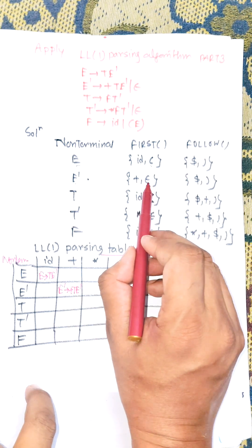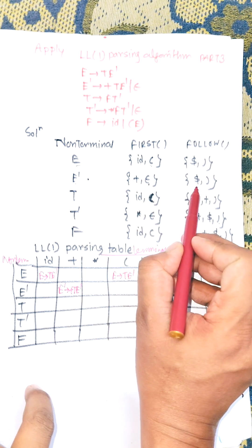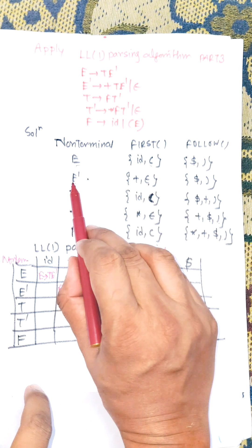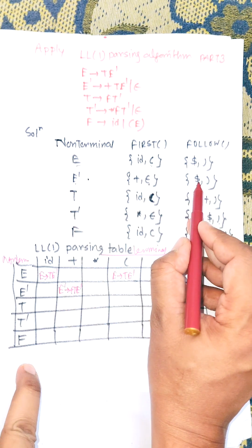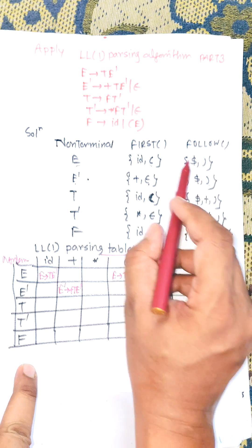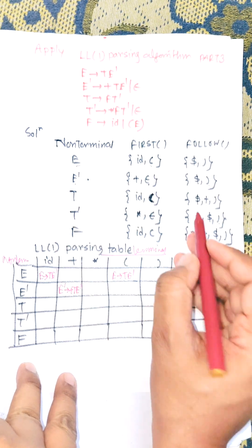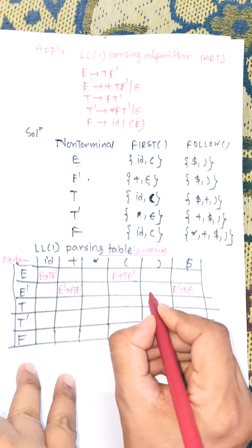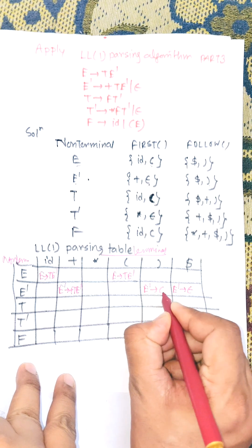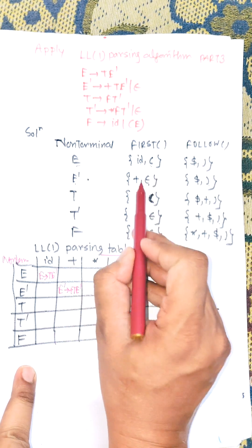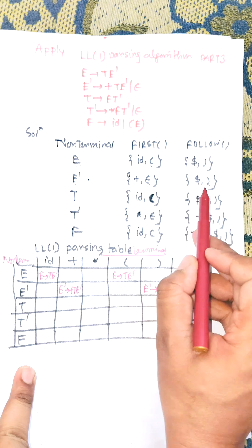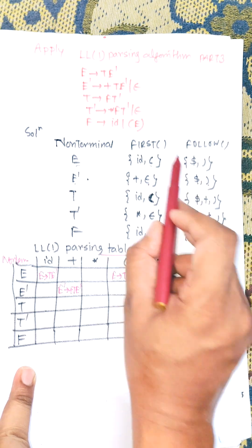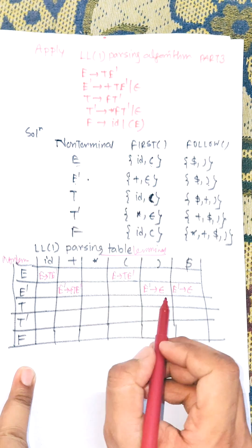Since there is an ε in FIRST(E'), we do not enter ε directly. Instead, we need to find FOLLOW(E'), which is {$, ')'}. We apply E' → ε under both $ and ')'. When there is an epsilon production, we consider the FOLLOW of the symbol and put E' → ε in both cases.